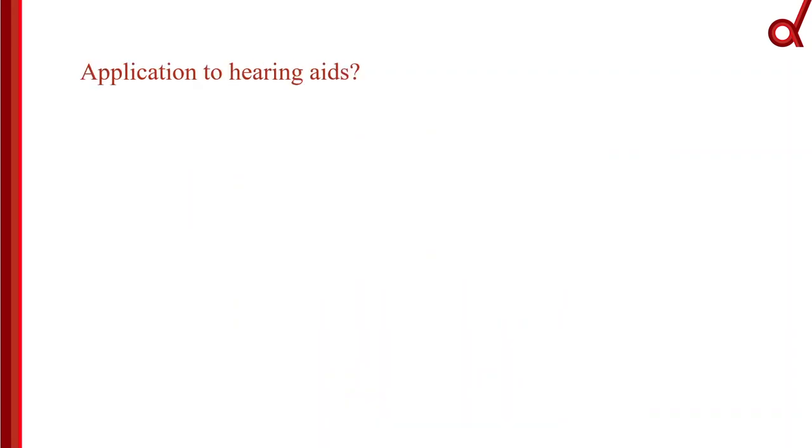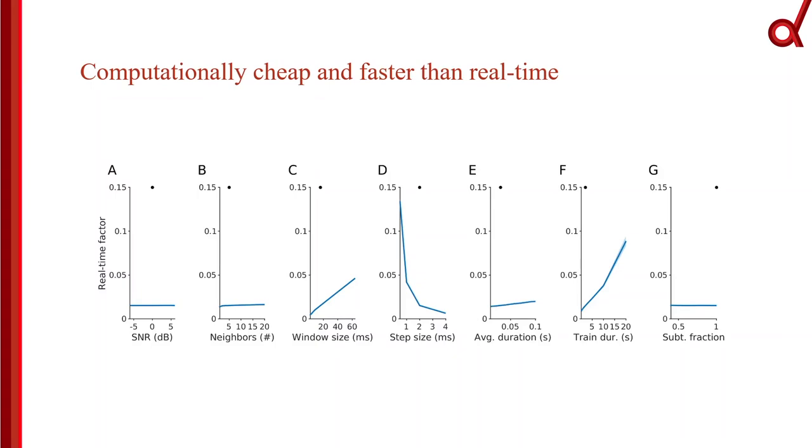Now, the filtering methods that are to be used in devices like hearing aids need to be fast and computationally cheap. To see how our algorithm fares in this respect, we varied its parameters and analyzed the processing times. Our findings indicate that parameters required for optimal performance, shown with black dots here, allow our algorithm to run significantly faster than real time, which opens up the possibility to integrate it to existing processing pipelines.